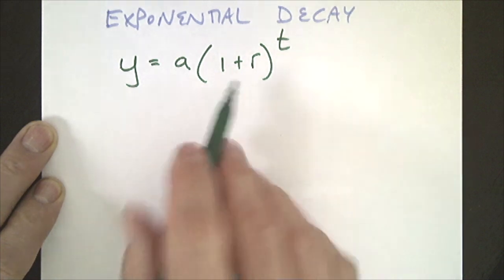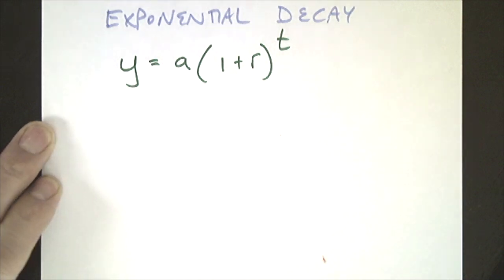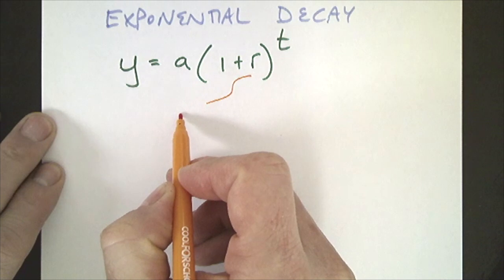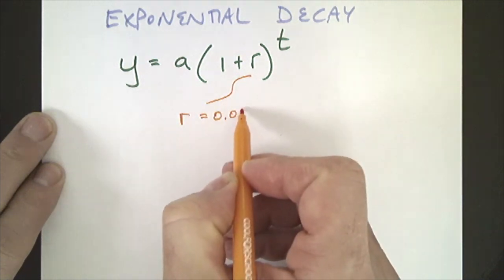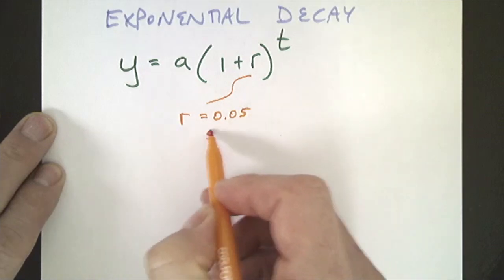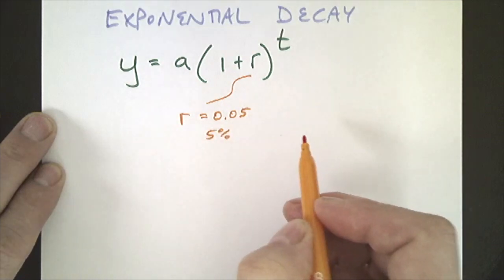So if this were growth rate, this would be some R as in 0.05 would be like 5% increase growth rate.